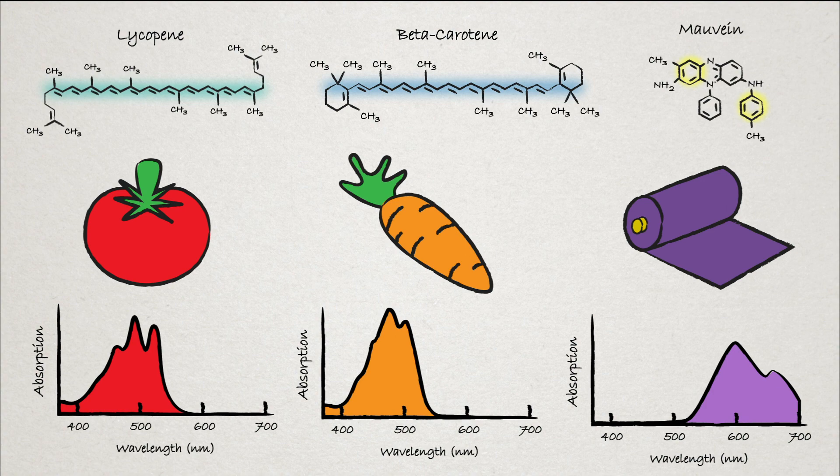So the next time you see a colorful fruit or something, think about how the electrons of the molecules band together to absorb small sections of the visible spectrum. And the color theory, and the way our brain interprets color, leads us to think something is a single color, but there's always more going on.